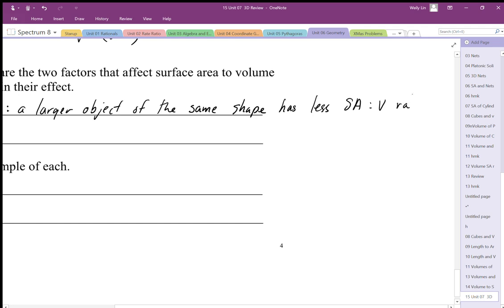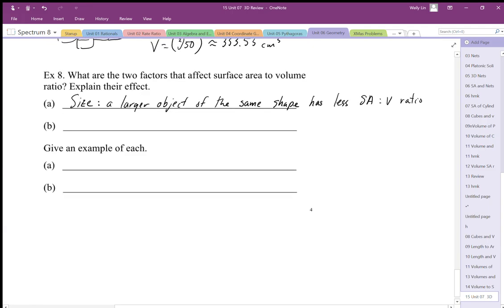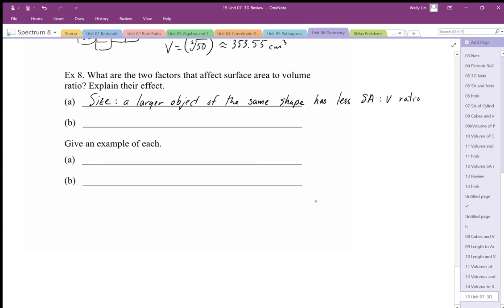Okay, it has less surface area to volume ratio. The other thing is shape. So shape is the other factor involved. So the two things are size and shape.